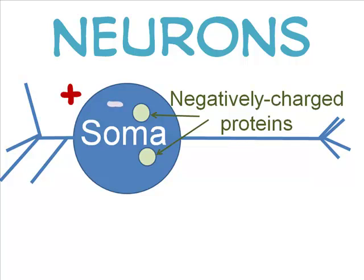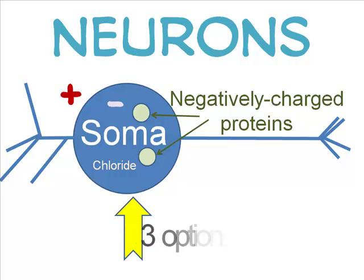The neuron also contains chloride, which is negatively charged. With all this negativity, the obvious solution to the cell's imbalance is to bring more positive ions from outside the cell to inside the cell.